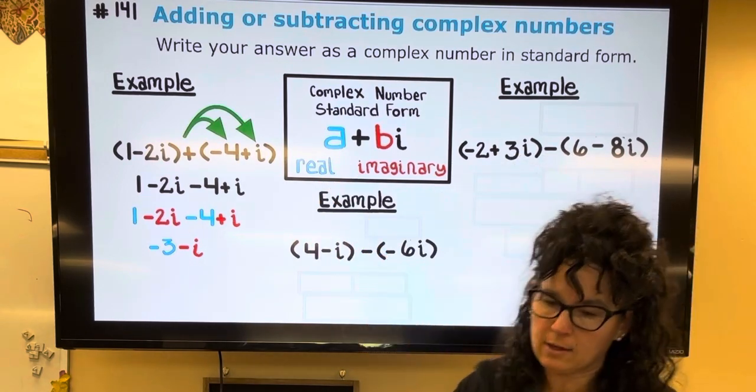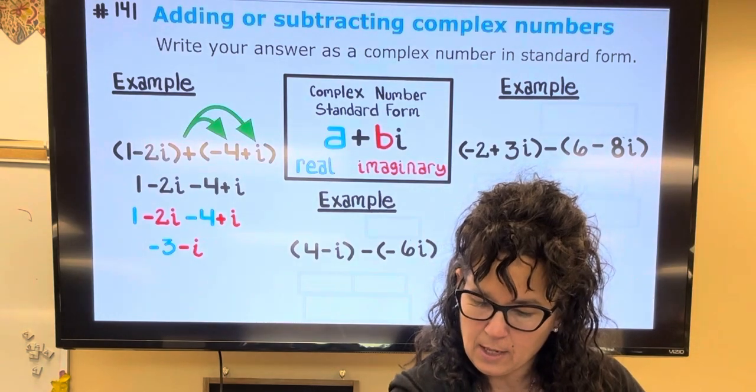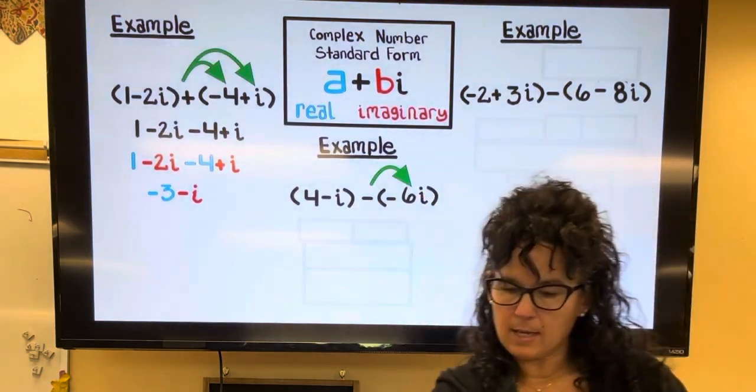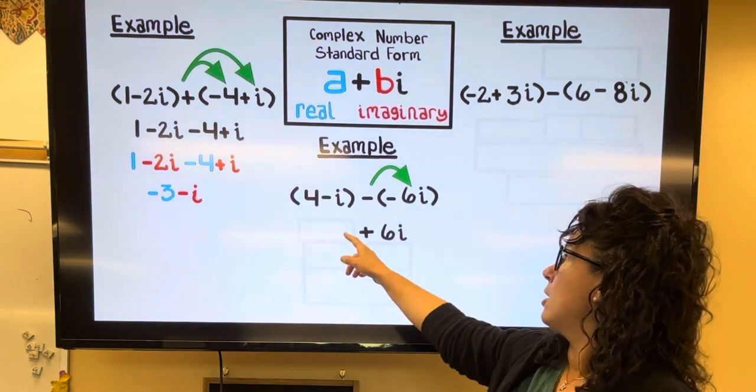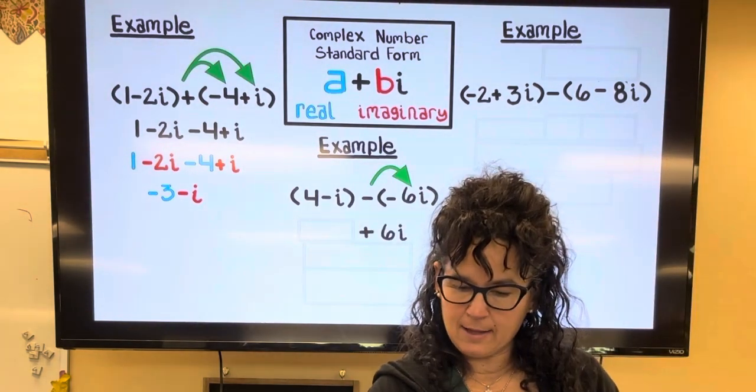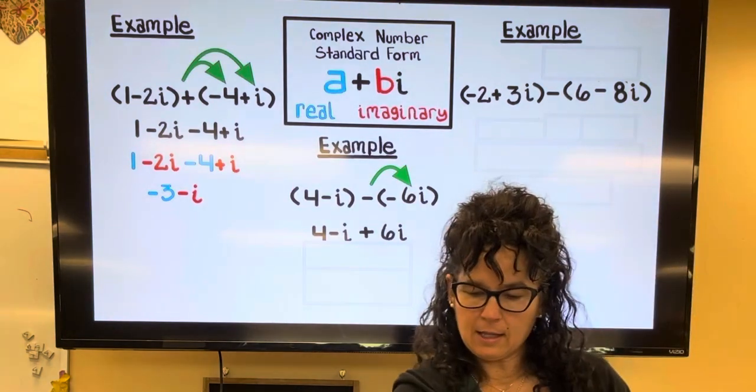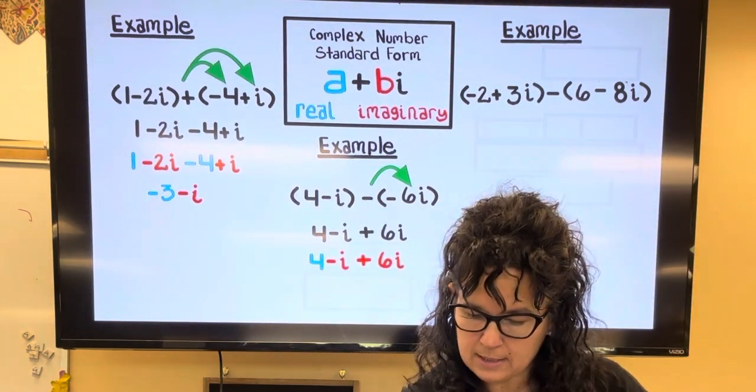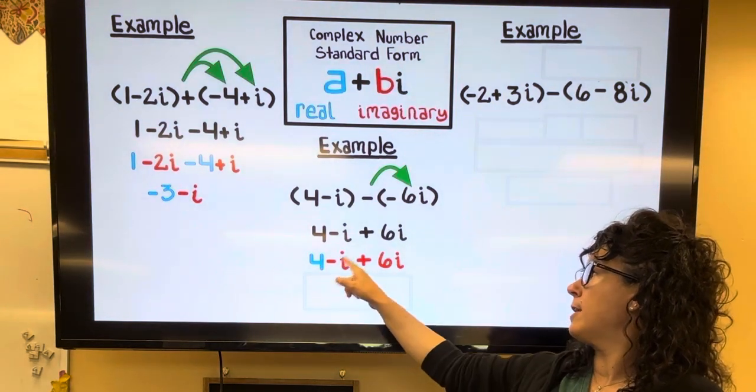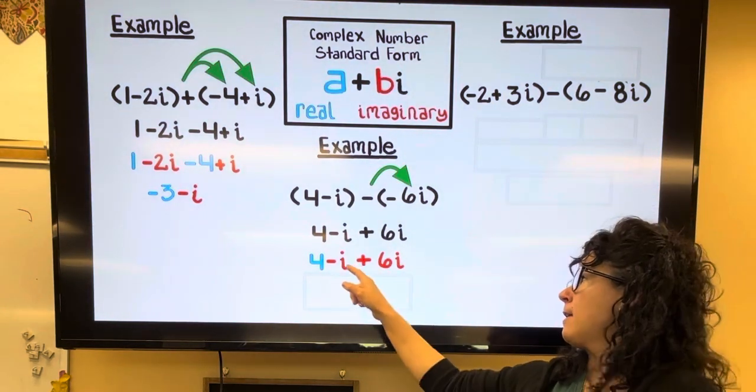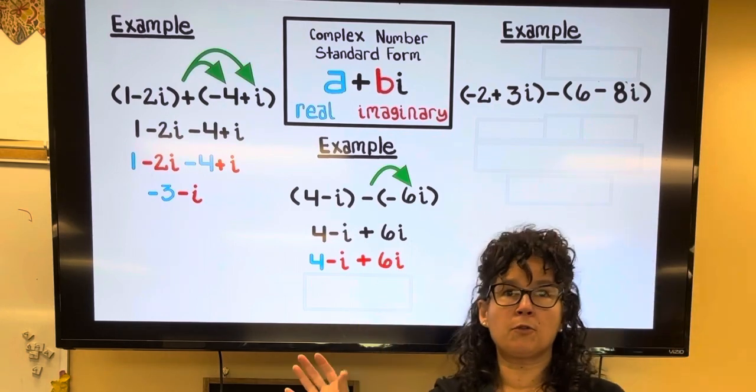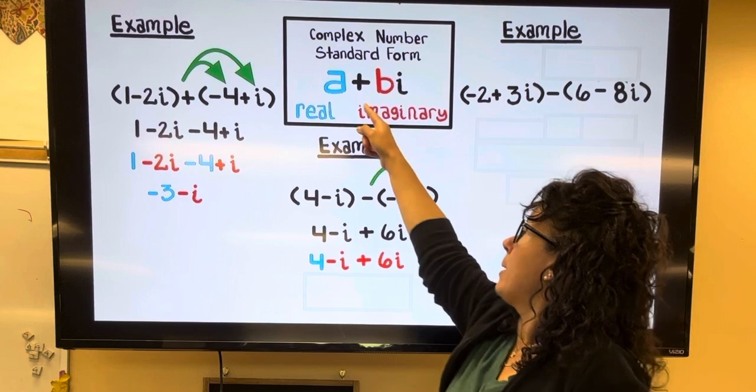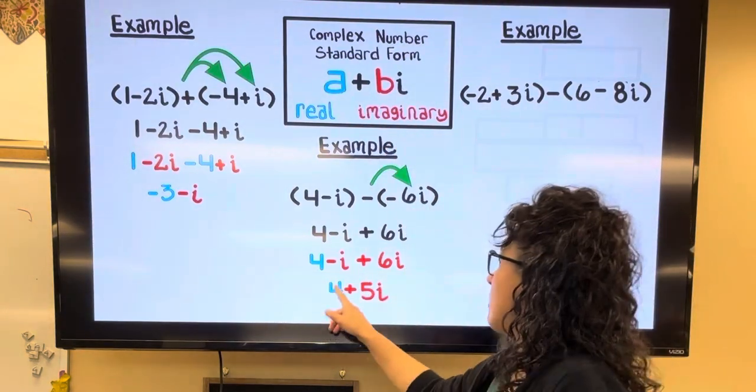Right here I'm going to distribute this negative through. And when I distribute that through, a negative negative, that's going to be a plus 6i. We can bring down the 4 - i that's in front. Highlighting the numbers and the complex pieces. So we have 4, we have -i plus 6i, that makes 5i. But again, for formatting, instead of doing 5i + 4, I want to put my number first and my i's at the end. So I'm going to write 4 + 5i.